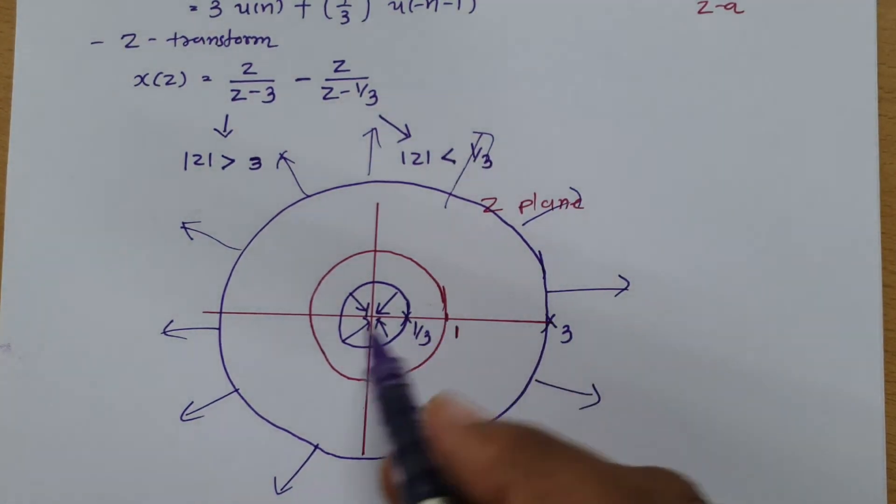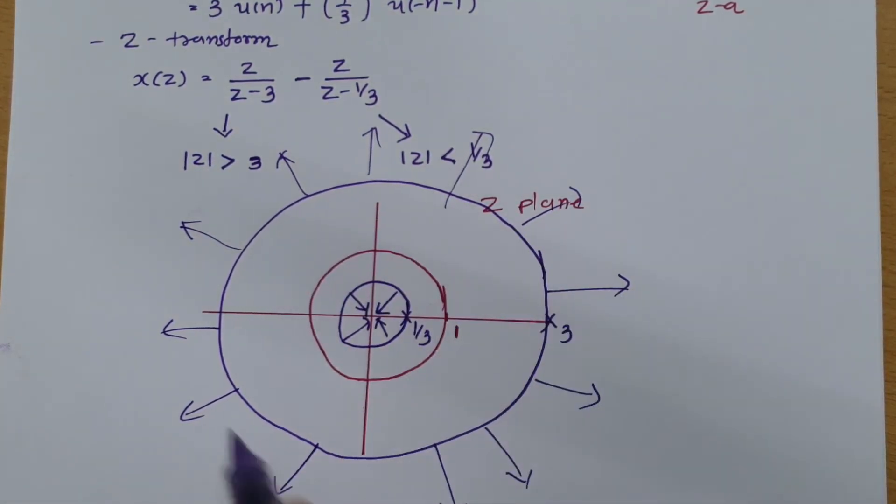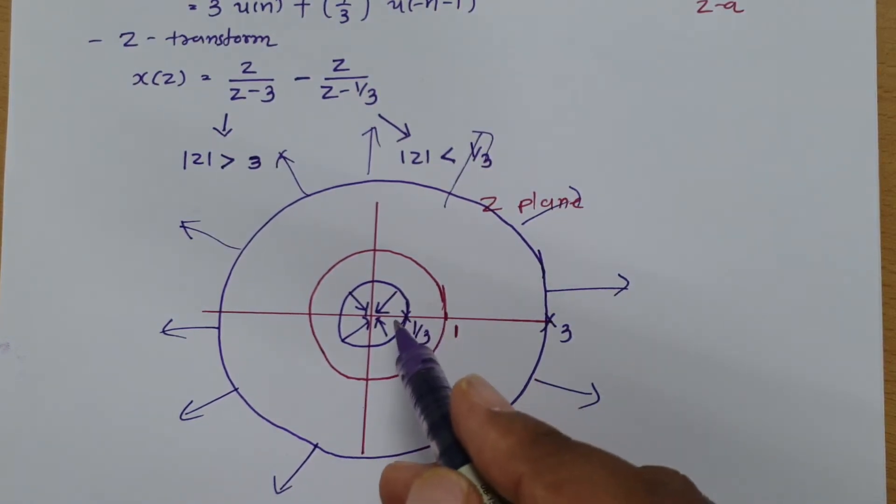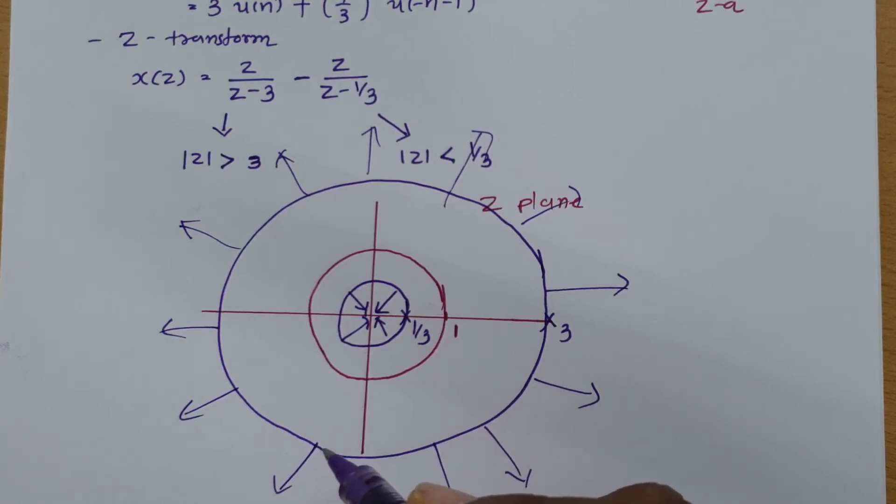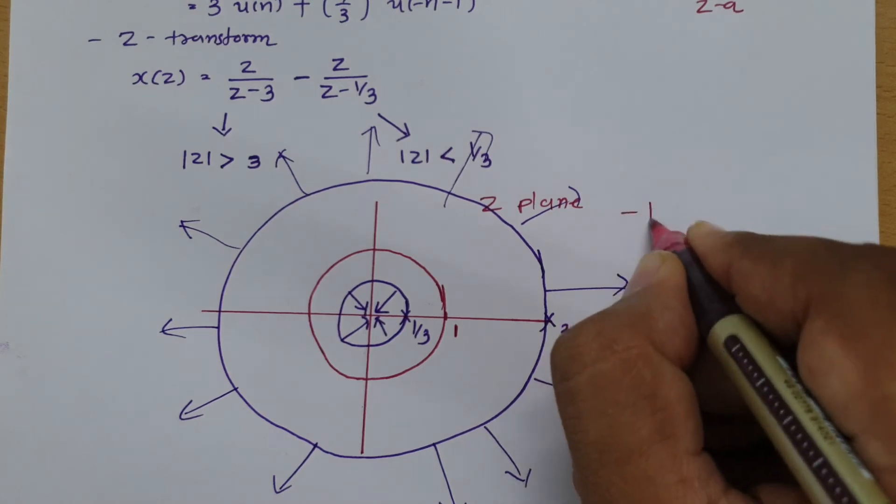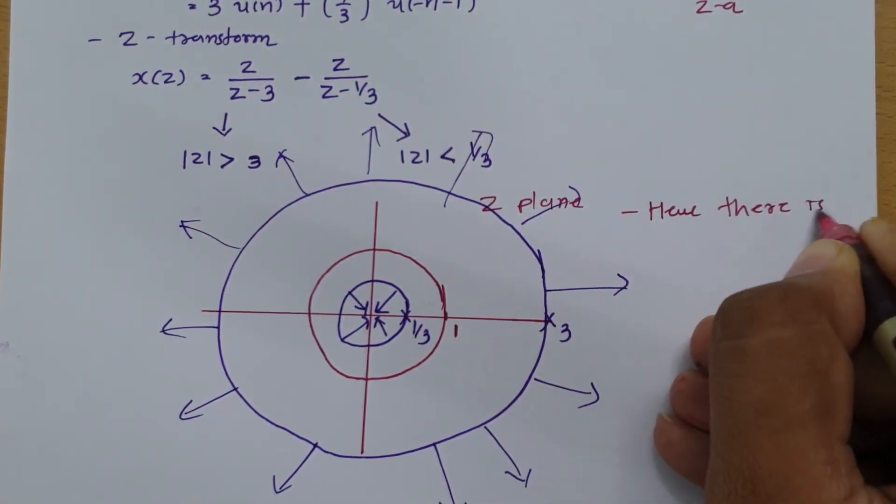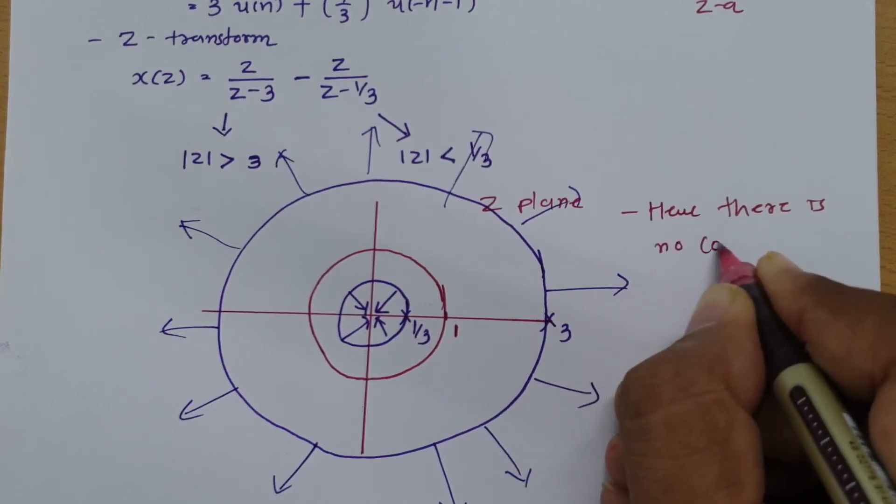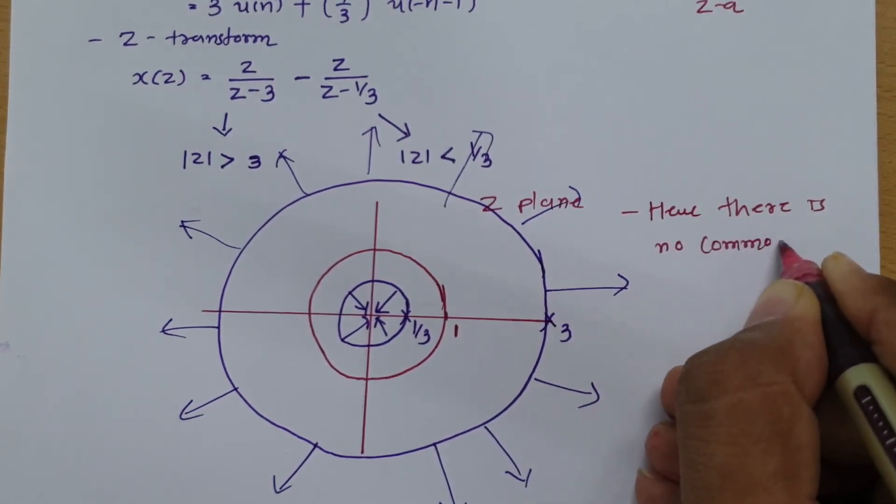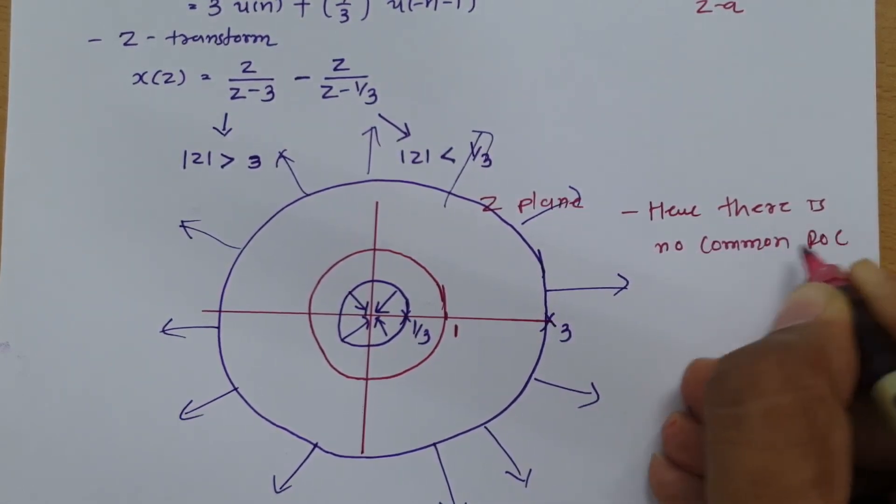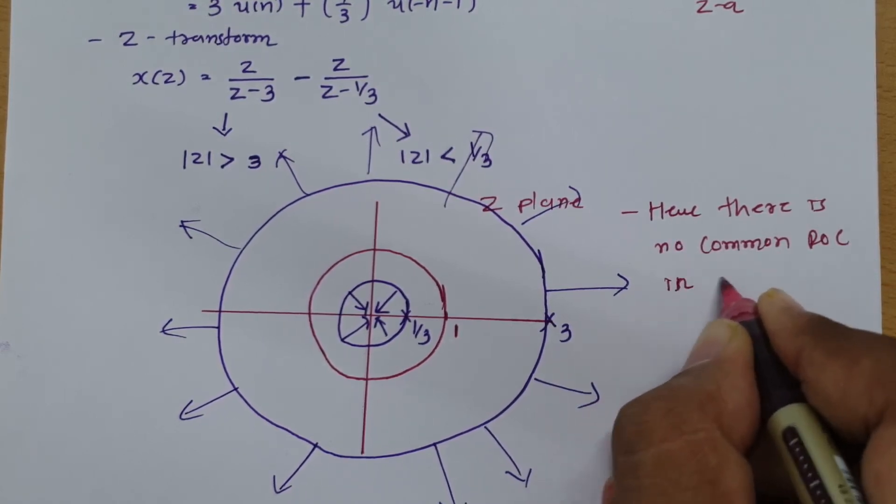So here one can observe there is no common ROC between these two poles. There should be overlapping of ROC for there to be common ROC. So here there is no common ROC in the given question.